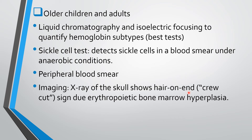The crew cut sign or hair-on-end appearance seen in skull X-ray is another common MCQ. It occurs due to erythropoietic bone marrow hyperplasia — the body's attempt to compensate for chronic anemia causes every bone marrow including that of the skull bones to undergo hyperplasia, producing the characteristic hair-on-end appearance on skull X-ray.